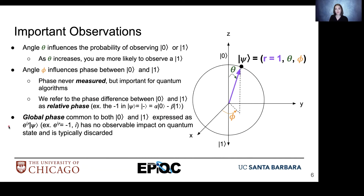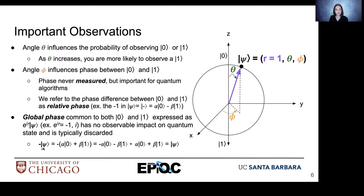We also have global phase. This is common to both ket0 and ket1 and is expressed as a coefficient multiplied by the quantum state. You'll sometimes see a global phase of negative 1 or i. This has no observable effect on quantum state, so often it's just discarded. If we look at what that global phase would be distributed between ket0 and ket1, it's common to both and we oftentimes just discard it when representing our qubit state.